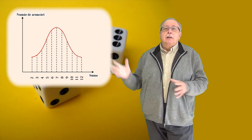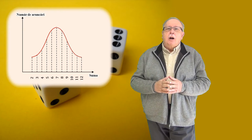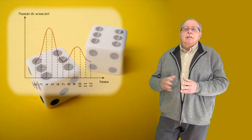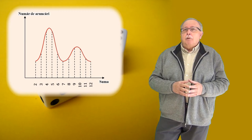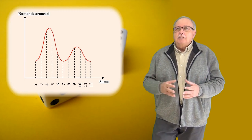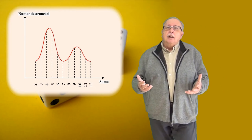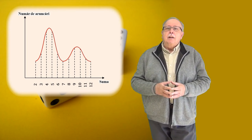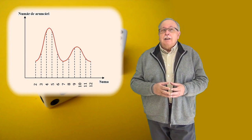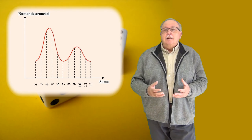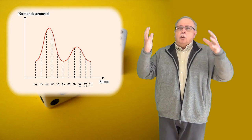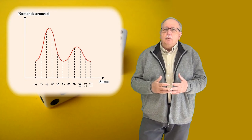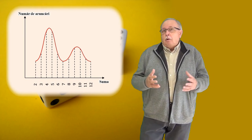Deci, totul este în regulă dacă vedem această formă cu maximul la 7, așa cum ne-am așteptat. Dar dacă forma graficului este alta, de pildă această formă, atunci asta poate să însemne mai multe lucruri. Poate să însemne că zarurile nu sunt cinstite — unul dintre ele, sau poate amândouă, au tendința de a cădea mai des pe anumite fețe decât pe altele. Sau ne arată că datele au fost alterate. O altă formă decât clopotul lui Gauss ne arată că ceva nu e în regulă cu fenomenul studiat, fie în desfășurarea fenomenului, fie în colectarea datelor, sau în amândouă.